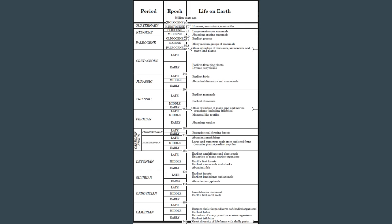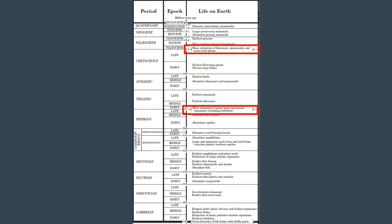Those are the dividing lines. Mass extinction of many land and marine organisms, including trilobites, happens between the Permian and the Triassic. Then later on, the mass extinction of dinosaurs — that number of 65 million years ago — happens at the end of the Paleozoic and beginning of the Mesozoic. And then the Mesozoic era ends and the Cenozoic era begins with the mass extinction of dinosaurs, ammonoids, and many land plants.